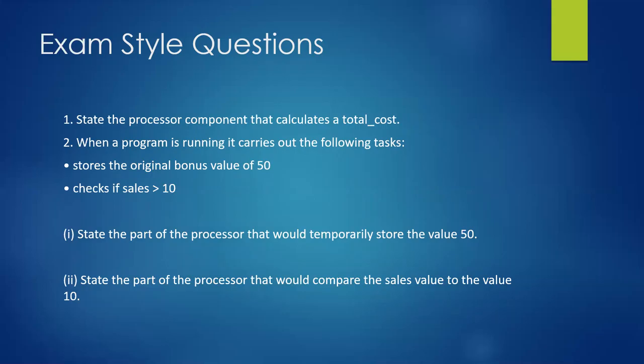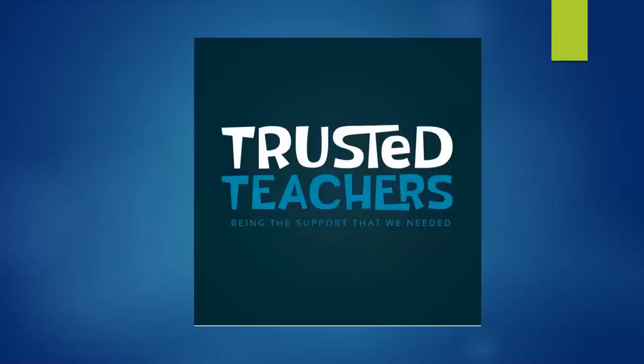Last but not least, the two other parts here. State the part of the processor that would temporarily store a value of 50. Registers? Absolutely. Spot on. Great answers. And lastly, state the part of the processor that would compare a sales value to the value of 10. ALU? ALU again, yes. Absolutely. So that's the processor and the three main parts of the processor: the ALU, the control unit, and the registers. And that's been another input by Trusted Teachers, being the support that we need.